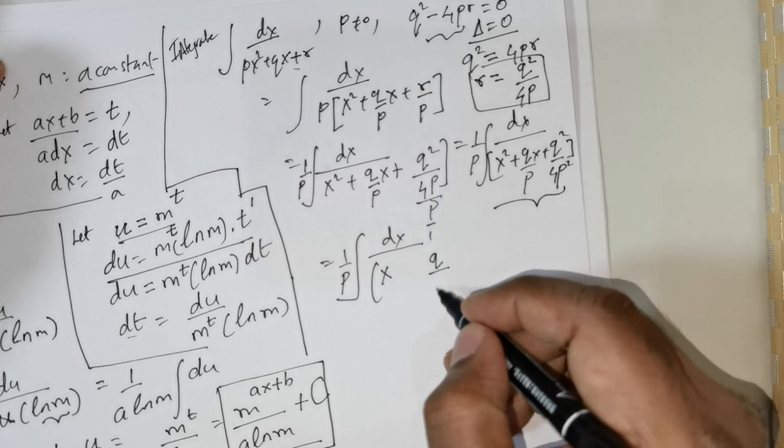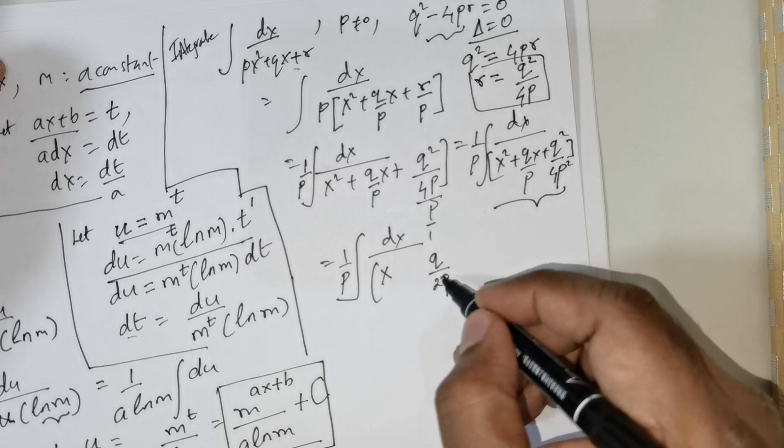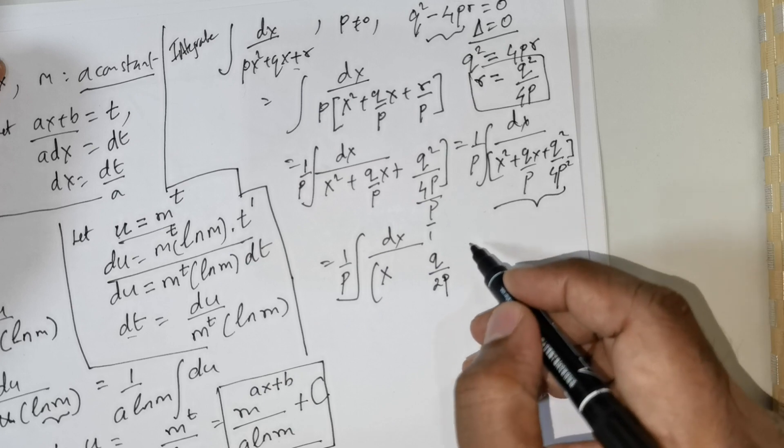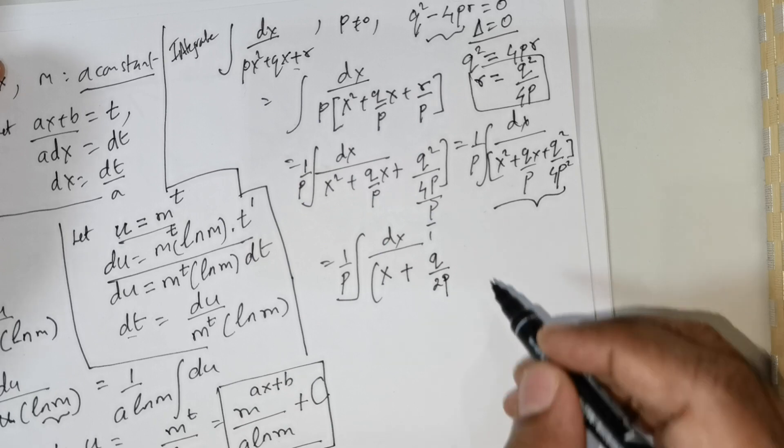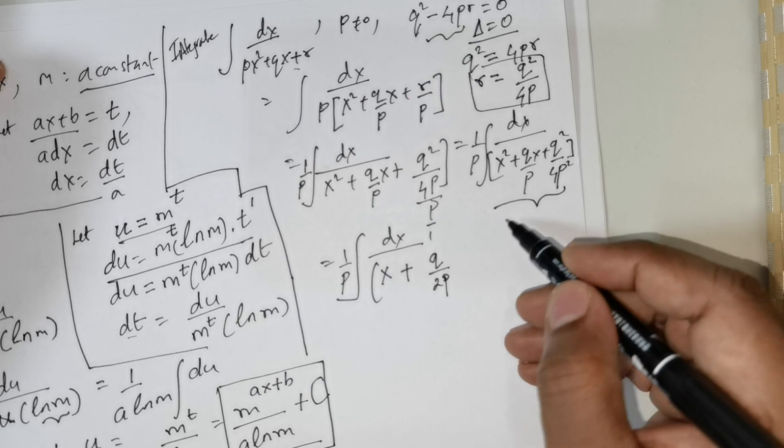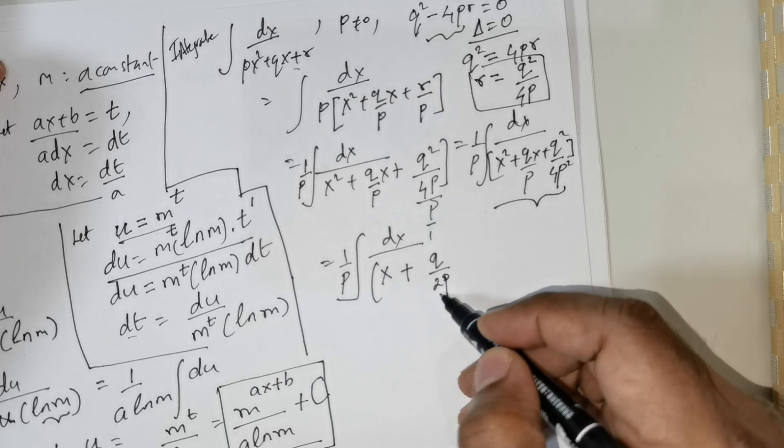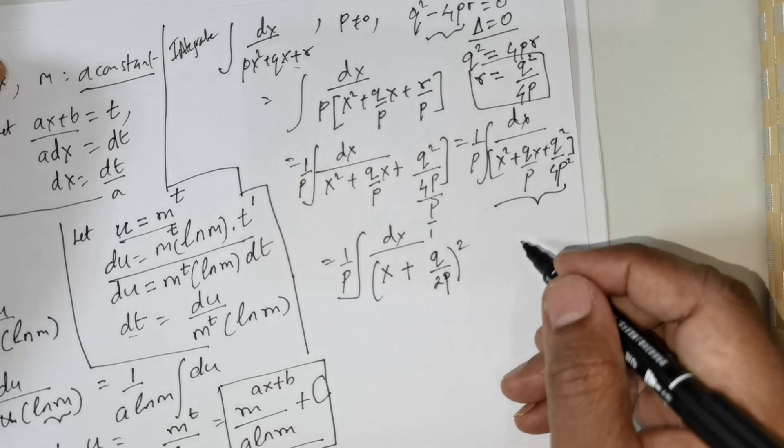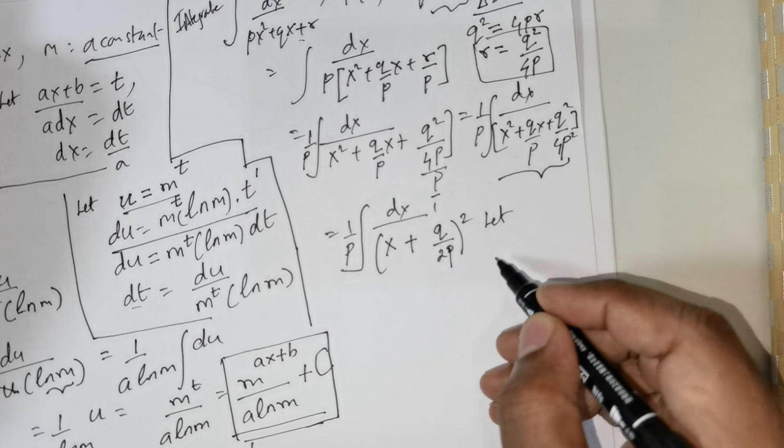The last term should give me q squared over 4p squared. So what has to be placed here which upon being squared would give me this? Definitely q over 2 times p. When you square it you get q squared divided by 4 times p squared. Since every sign is positive, a positive sign is placed. Now I need to get the second term, which is nothing but 2 times ab. So 2 times x times this quantity q over 2p is obviously going to give me this term.